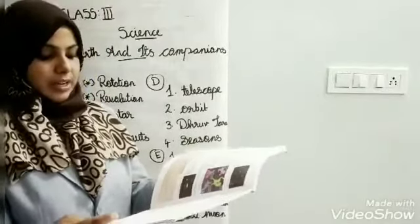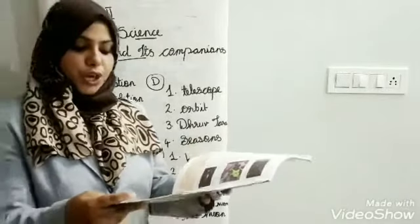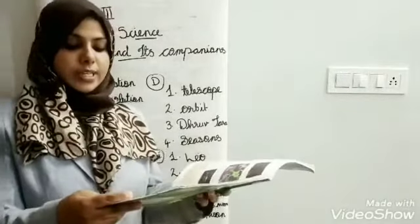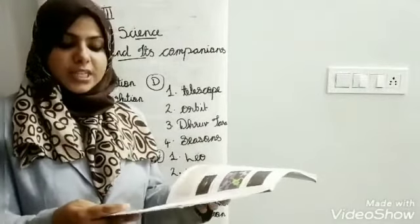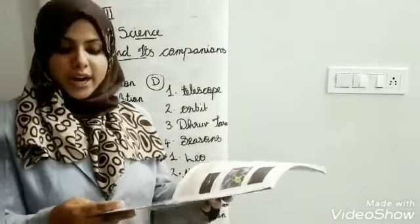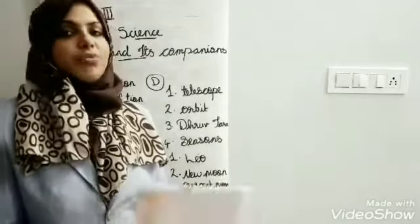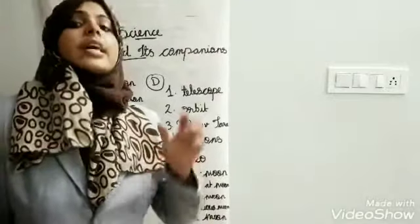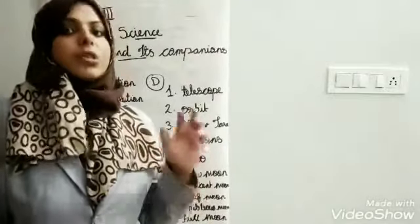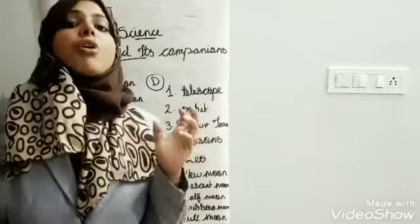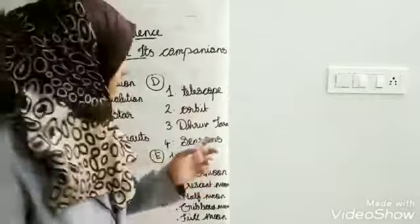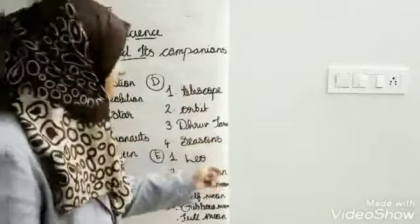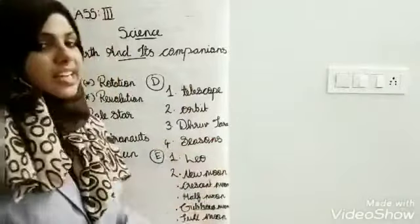Fourth question: the revolution of the Earth causes — seasons or day and night. We know rotation causes day and night, so the revolution of the Earth causes seasons. The right answer is seasons.